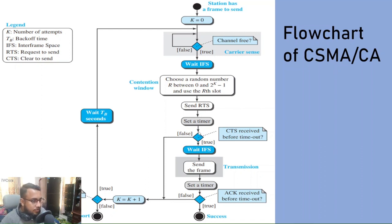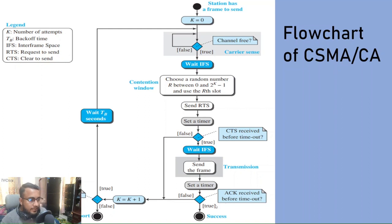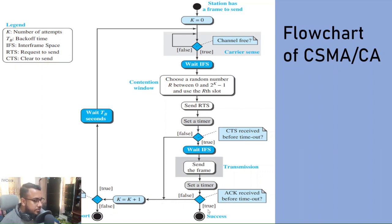However, if RTS is sent but no CTS is received, then it takes the false path — the next attempt will be made. Similarly, if the acknowledgement message is not received, that means a collision has occurred in the channel. Again the false path is taken and the next attempt is readied.